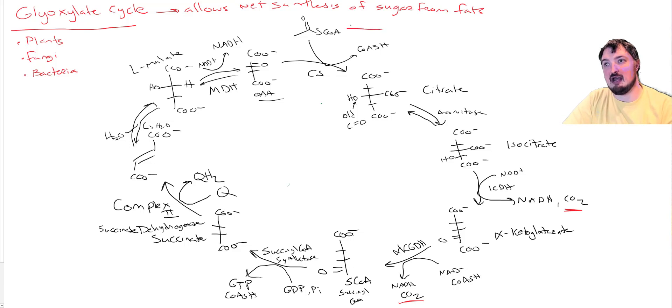The key thing about this is it allows net synthesis of sugar from fats. Acetyl-CoA, if you recall, is the main breakdown product of fats. We can't use our fat to make sugar or blood sugar. The fats that we burn in our body are used as fuel by cells. They're not used to make new glucose. That's what your amino acids are used for.